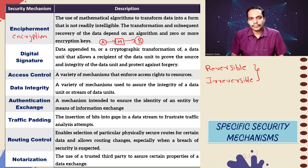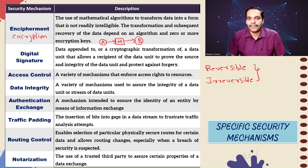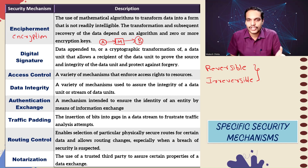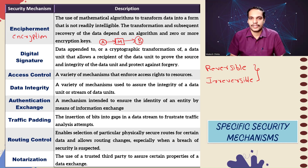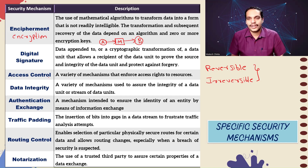Next comes digital signature, which involves data appended to or a cryptographic transformation of a data unit that allows a recipient to prove the source and integrity of the data unit and protect against forgery. While encipherment tries to hide data from unauthorized disclosure, digital signatures ensure the recipient that the message actually originated from sender A, and also ensure the integrity of the message — meaning no unauthorized modification was done and the message is genuinely coming from sender A.